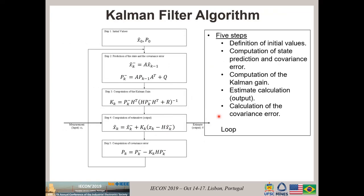The Kalman filter algorithm is shown in this picture. It is made by five steps. Step one is just the initial values. Step two is the computation of state prediction and covariance error through these equations. The third step is the computation of the Kalman gain, which is actually the weight of the samples. Step four is the estimative, which is the output. And the last step is the computation of the covariance error. This is a loop, and this is the algorithm of the Kalman filter.